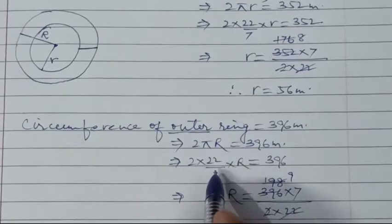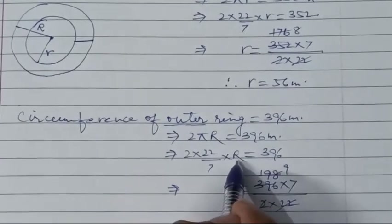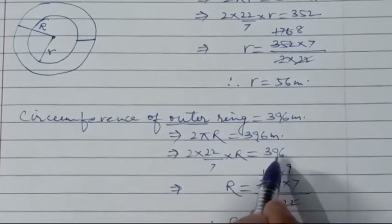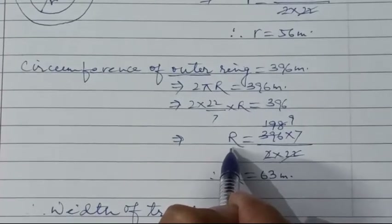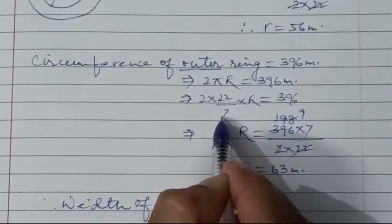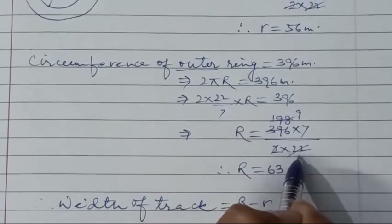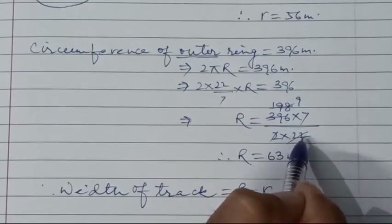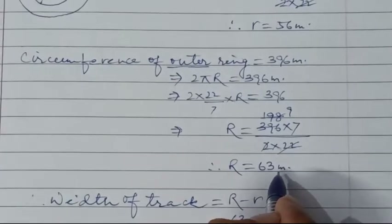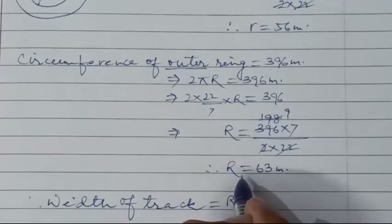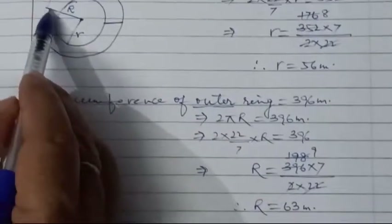2πR = 396. Substituting π = 22/7: 2 × (22/7) × R = 396. Cross multiplying, R = (396 × 7) ÷ 44 = 63 meters. Therefore capital R (outer radius) = 63 meters.